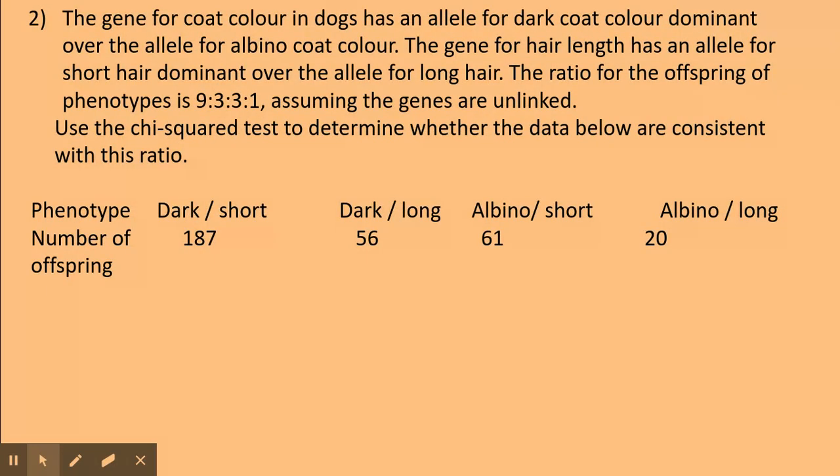Here's our question. If you want to pause it and have a go, it's a very good idea to lay it out in a table, which I will put on shortly. In this particular example we are looking at two genes: one which codes for either being dark or albino, and the other one which codes for either being short or long. It gives a nine to three to three to one ratio.